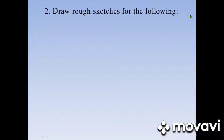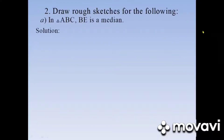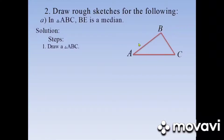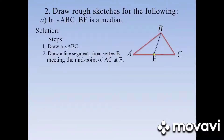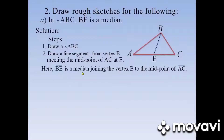Question number two: Draw rough sketches for the following. Sub A — In triangle ABC, BE is a median. We have to draw a triangle ABC whose median is BE. Step one: Draw a triangle ABC with vertices A, B, and C. Step two: Draw a line segment from vertex B meeting the midpoint of AC at E. Here E is the midpoint of AC. BE is a median joining the vertex B to the midpoint of AC.